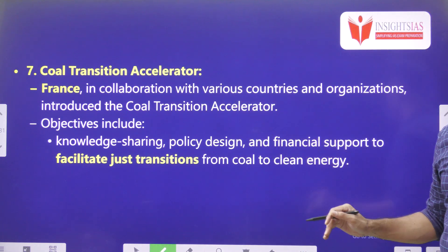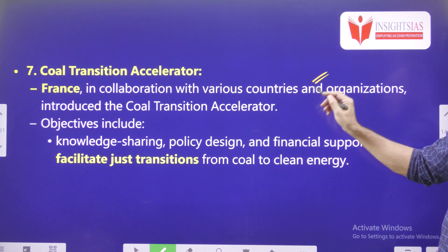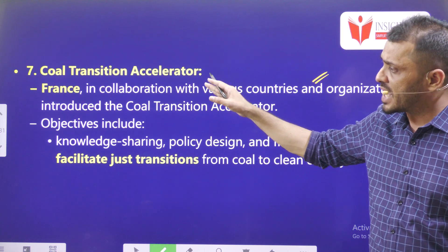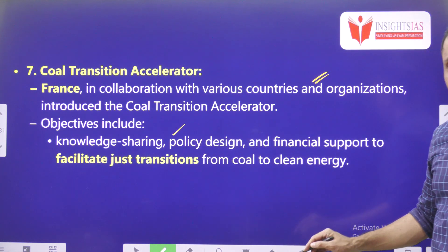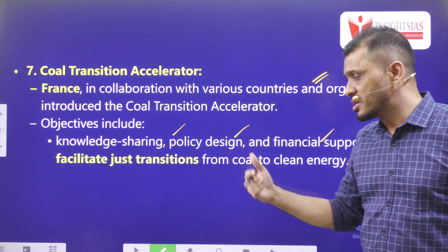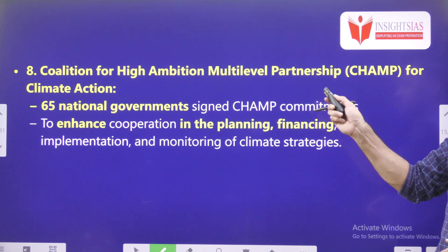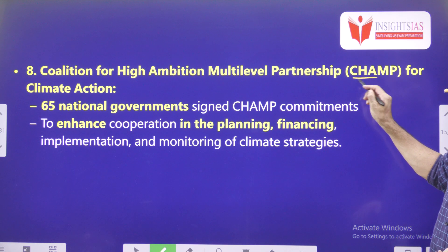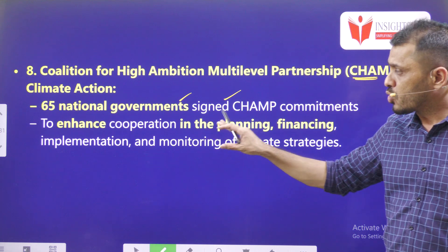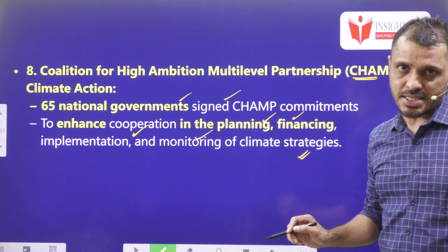The seventh outcome is the Coal Transition Accelerator. France took the initiative and in collaboration with various other countries is leading it. As part of this, knowledge sharing, policy decisions, and financial support will be given so countries can transition from coal to clean energy. The eighth outcome is the Coalition for High Ambition Multi-level Partnership, CHAMP. Sixty-five national governments signed this commitment, mainly related to cooperation in planning, financing, implementation, and monitoring of climate strategies.